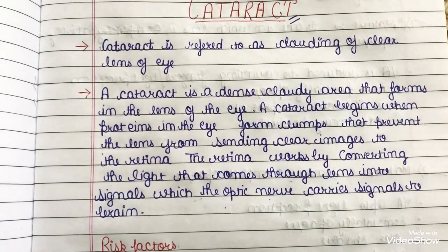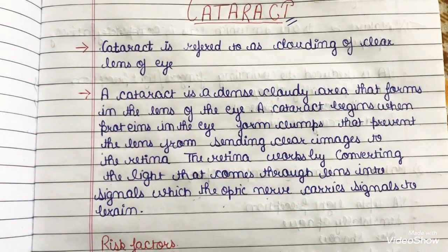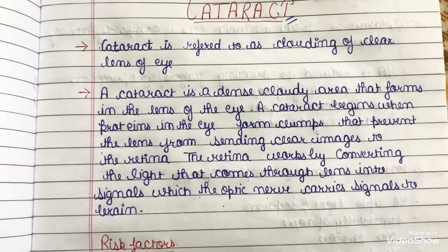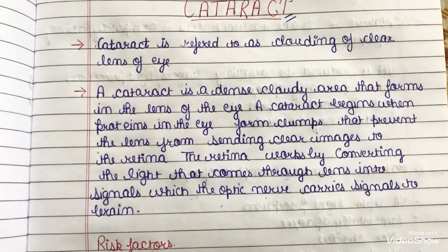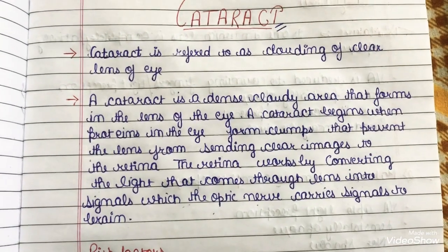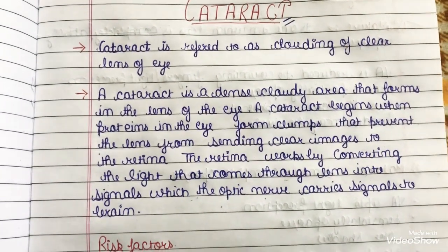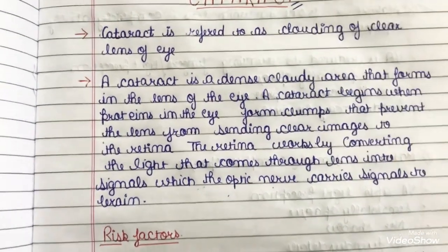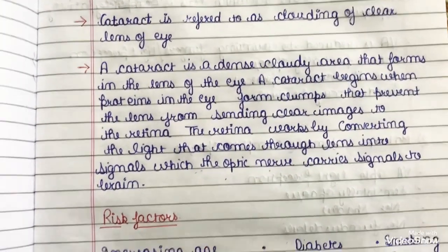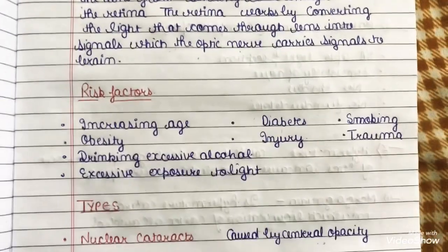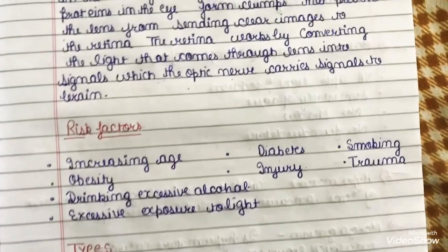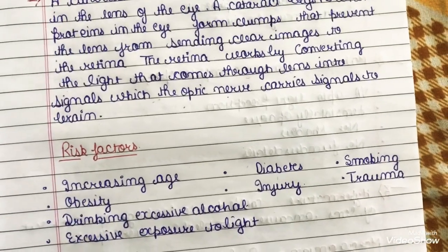When clear images are not properly transmitted through the lens to the retina, our vision becomes blurred and the lens becomes opaque.